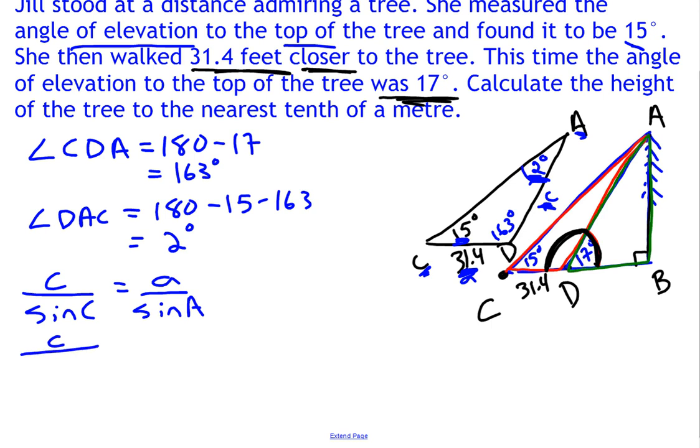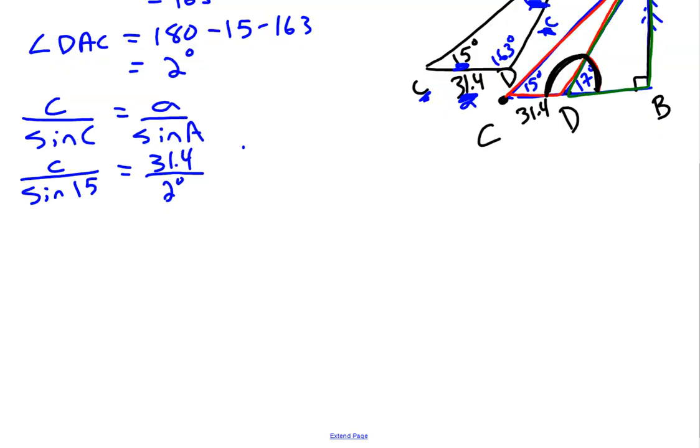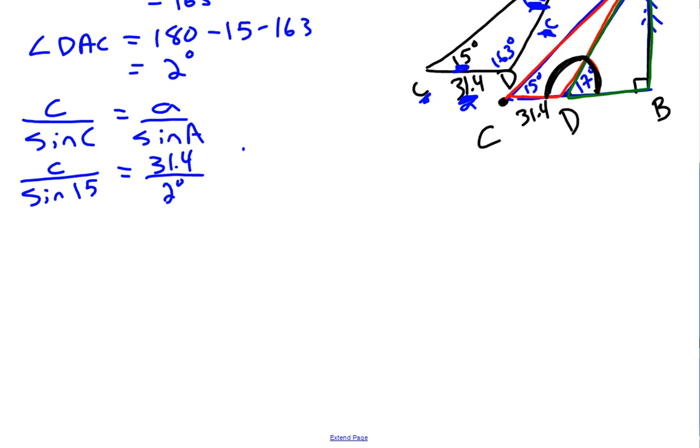Let's plug in the values that we have. We don't know what side length C is, so we're going to leave that for now. Angle C is 15 degrees. Side A is 31.4 feet. And angle A is 2 degrees. So now we have a sine law kind of question. We've seen these before, so let's go ahead and solve this for C. This should be sine of 2 degrees.